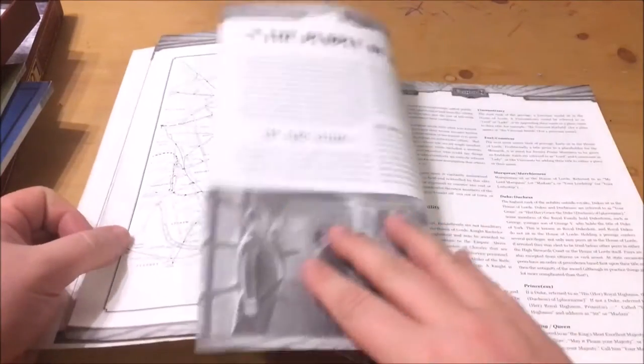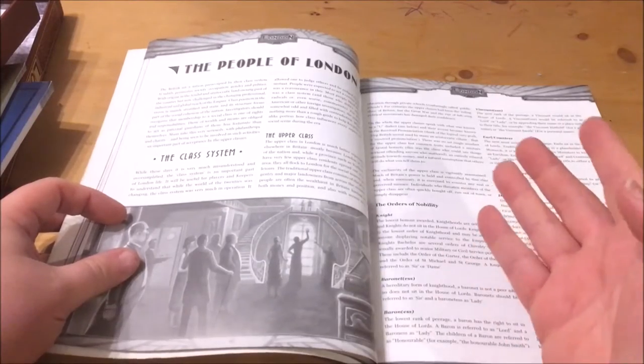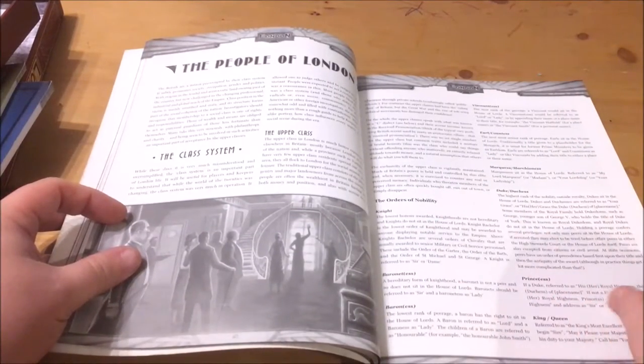Chapter 6 is called The People of London. Here we have information on the class system including the correct terms to use when speaking to the various levels of nobility.